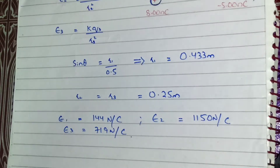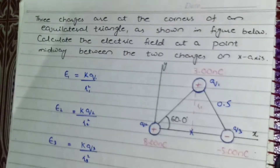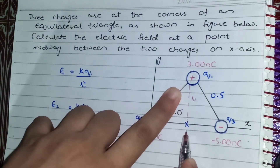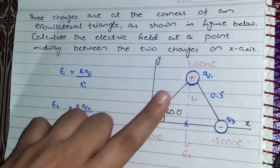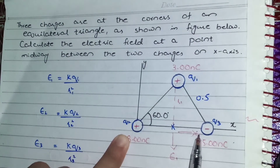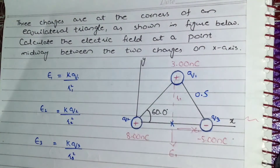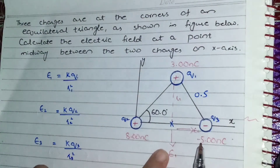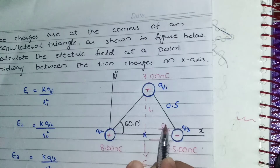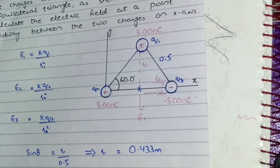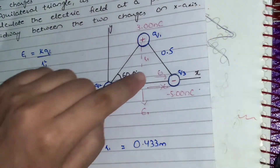Now for direction, referring to the diagram: the direction of the electric field points away from a positive charge. q1 is positive, so the direction of E1 points away from it. q2 is also positive, so E2 points away from it toward the midpoint. q3 is negative, so the direction of E3 is toward the negative charge.